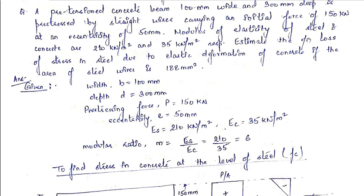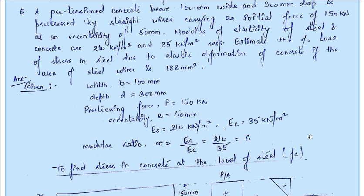We have to find the percentage loss of stress in steel due to elastic deformation. The formula for loss due to elastic deformation is m × Fc, where m is the modular ratio and Fc is the stress in concrete at the level of steel. The modular ratio m = Es / Ec = 210 / 35 = 6.